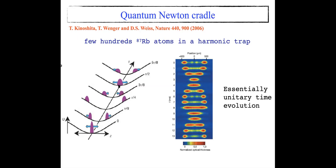When these clouds meet in the center, they interact, because the atoms are strongly interacting objects, and then they depart in the opposite direction, always conserving energy and momentum. Here on the right of the slide you can see data from the real experiment for about one period, and you see that during this period there is no loss of information — the dynamics is basically unitary.